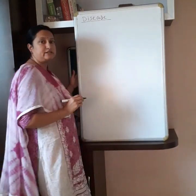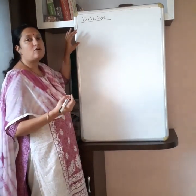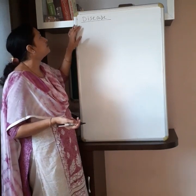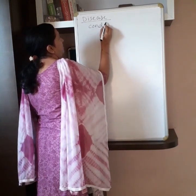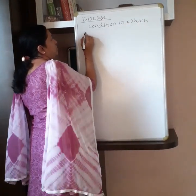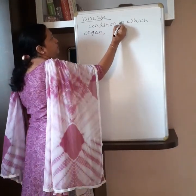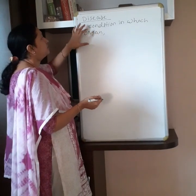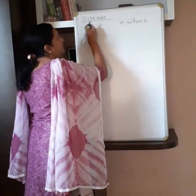So what is disease? Disease means it is the condition when an organ or any organ system does not work properly. Disease is the condition in which a organ or complete organ system does not work properly, or their function is deranged or altered. The altering of functions of an organ or organ system — this condition is called as the disease.